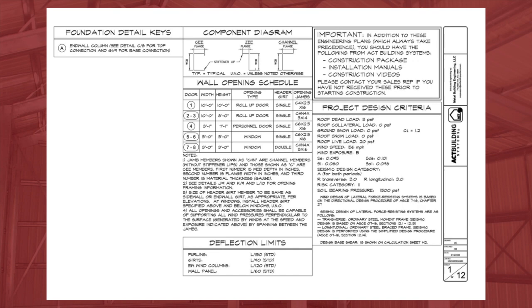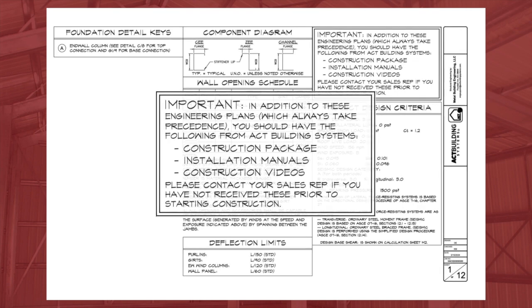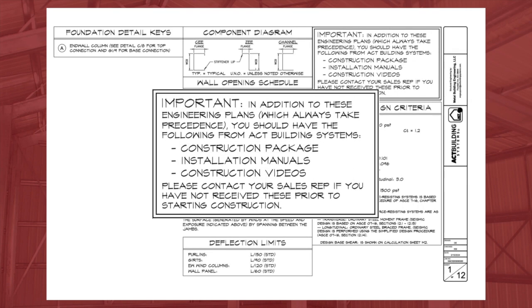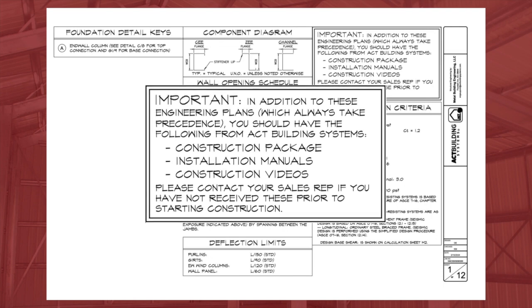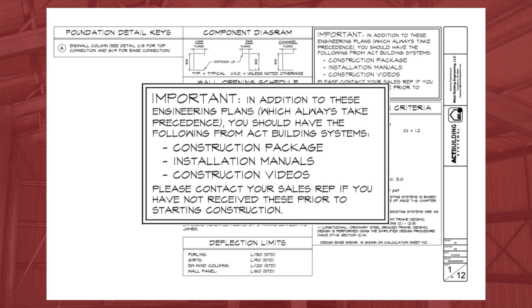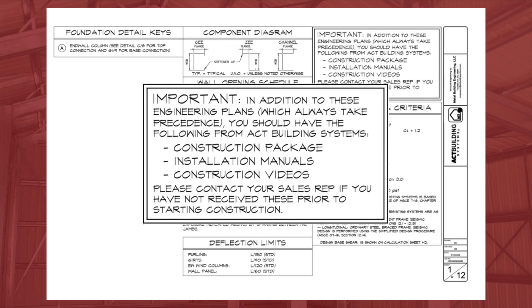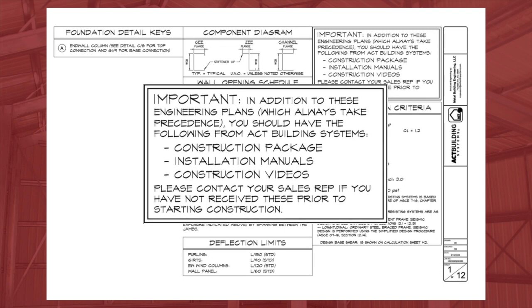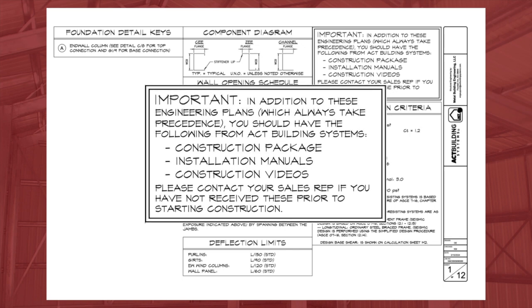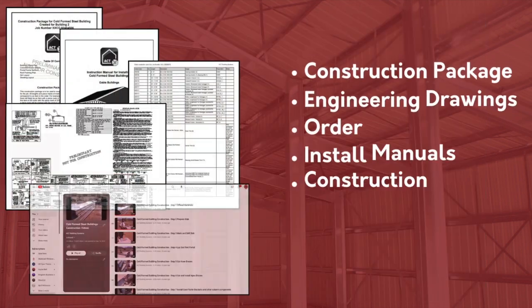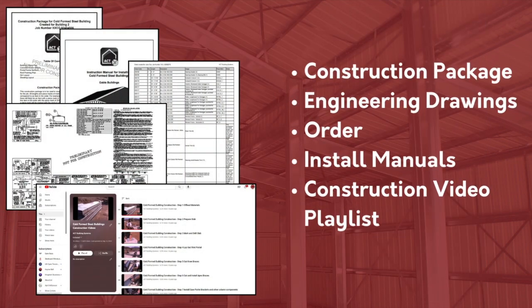The first page of your drawings includes several notices, including this one from ACT. In addition to these engineering plans, which always take precedence, you should have the following from ACT Building Systems: a construction package, installation manuals, and construction videos. Please contact your sales rep if you have not received these prior to starting construction. These materials, in addition to your order, all work together to make erecting your building easy.